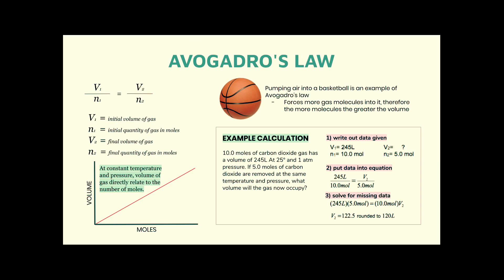Let's have a look at this example. So we have 10 moles of CO2, has a volume of 245 litres or decimetres cubed, the same thing, at 25 degrees C and 1 atmosphere pressure. If 5 moles of carbon dioxide, so now we've got a new N, are removed from the same temperature and pressure, so we always have to keep the temperature and pressure constant, if we are working with volume and moles, what is the new volume?